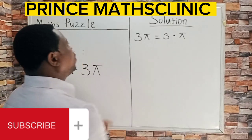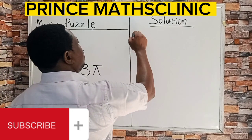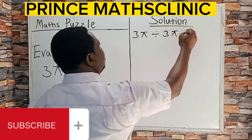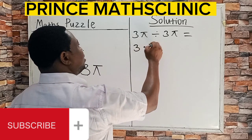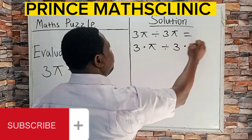Now that you know it means 3 times π, let's rewrite this question. 3π divided by 3π would be equal to 3 times π divided by 3 times π.